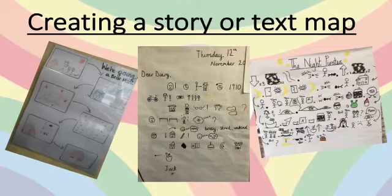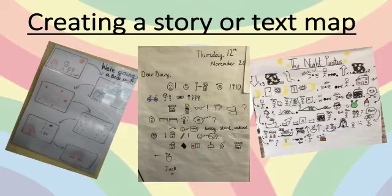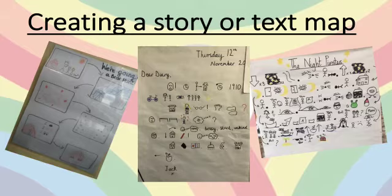The next part of the imitation stage is providing the children with a model text for the text type they are writing about. This could be a diary, a journey tale, or a non-chronological report. This is a really vital part of the Talk for Writing process as it shows the children what is expected of them and what they will be emulating when they come to write their own. Instead of giving the children a copy of the text in written form, the children will co-create a text or story map with the teacher through pictures and key phrases. You can see some examples here on the slide of story or text maps that the children have created.